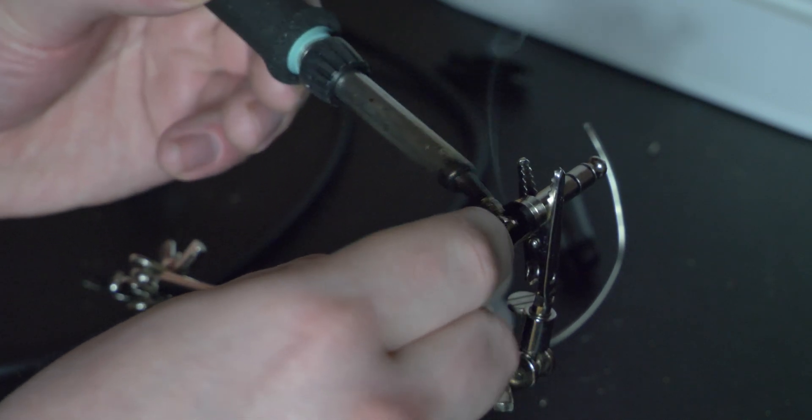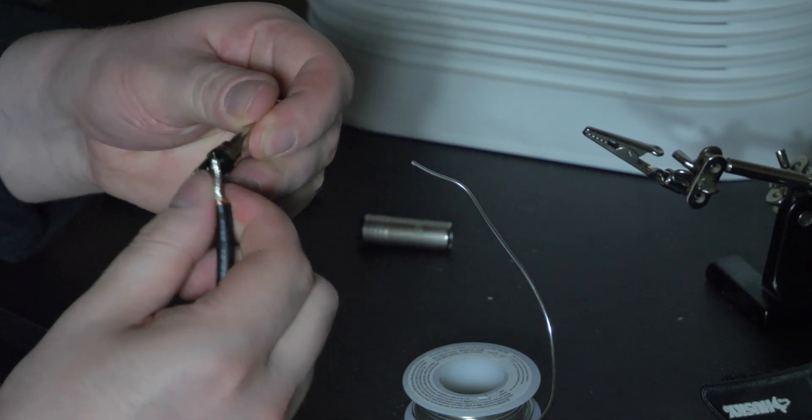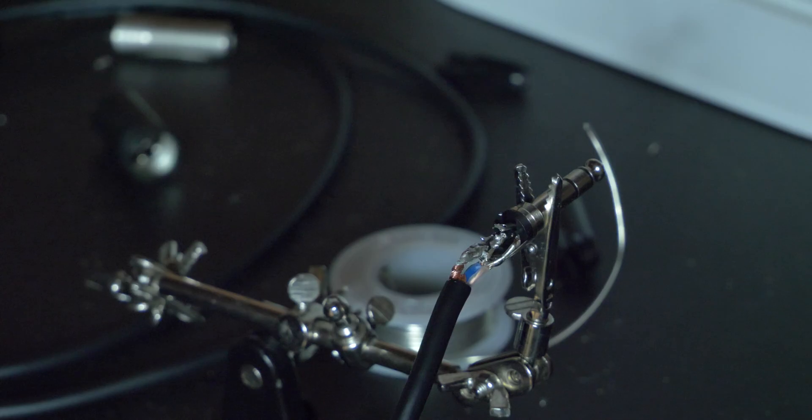If you've got steady hands and a thin tin job on the wire, you might be able to thread it through the hole. Otherwise, just tack it on top and trim off the excess.